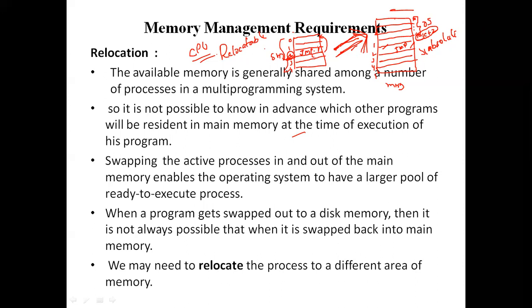We swap the process in and out from main memory to secondary memory. When the CPU asks for an instruction, we swap it from secondary memory to main memory. If that instruction is no longer required, we take it off and transfer it to empty space in secondary memory — that is relocation. When a program is swapped out of memory, it is not always possible to swap it back into the same location in main memory. We don't know when the CPU will ask for that instruction, so we may need to relocate the process to a different area of memory. The memory location is not fixed — that is relocation.